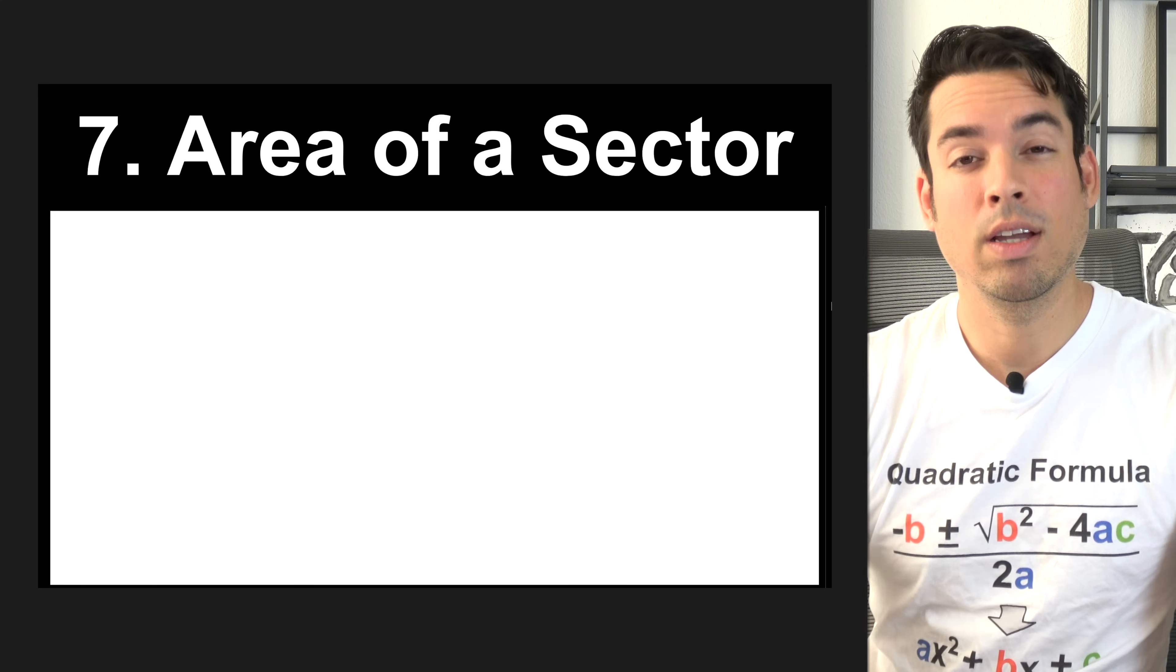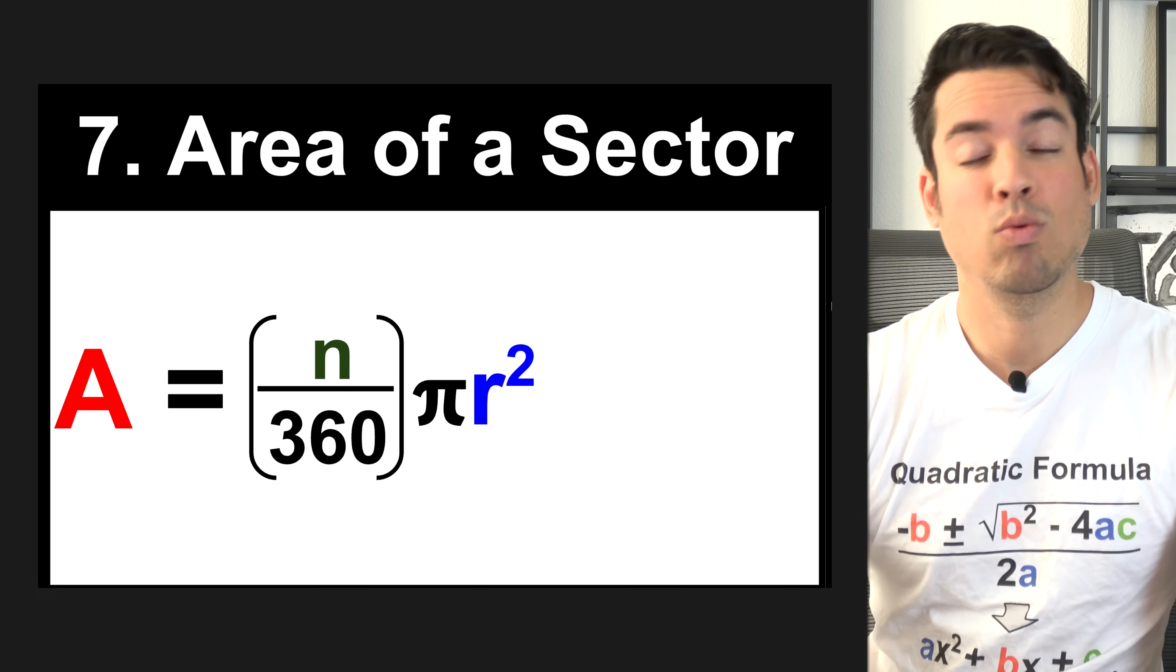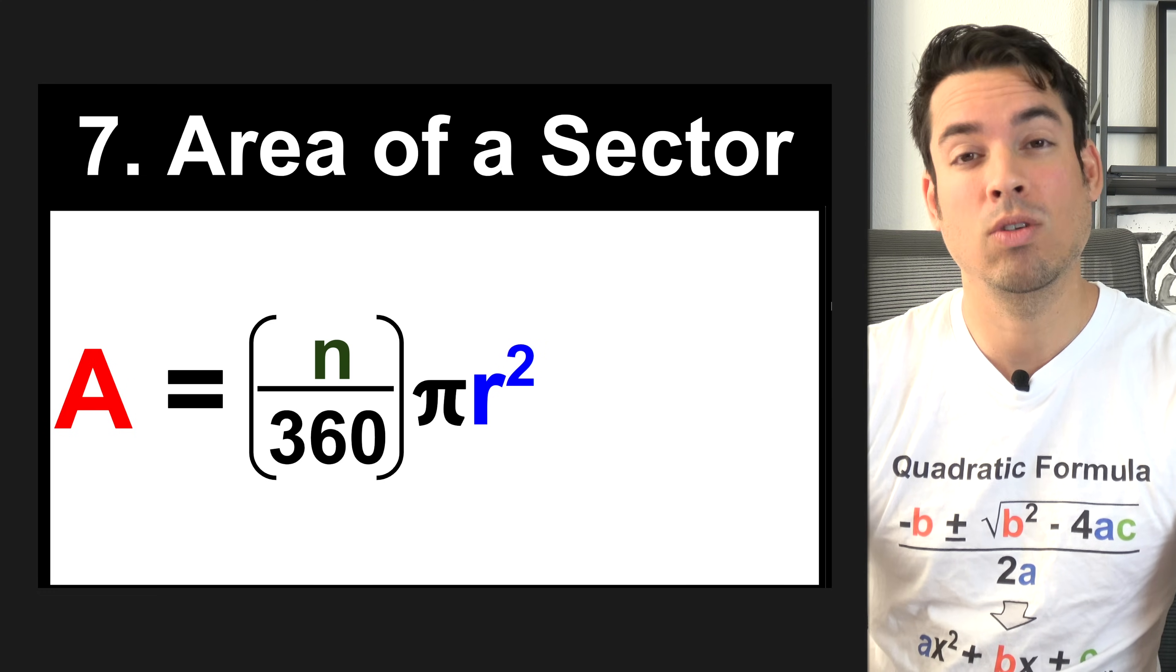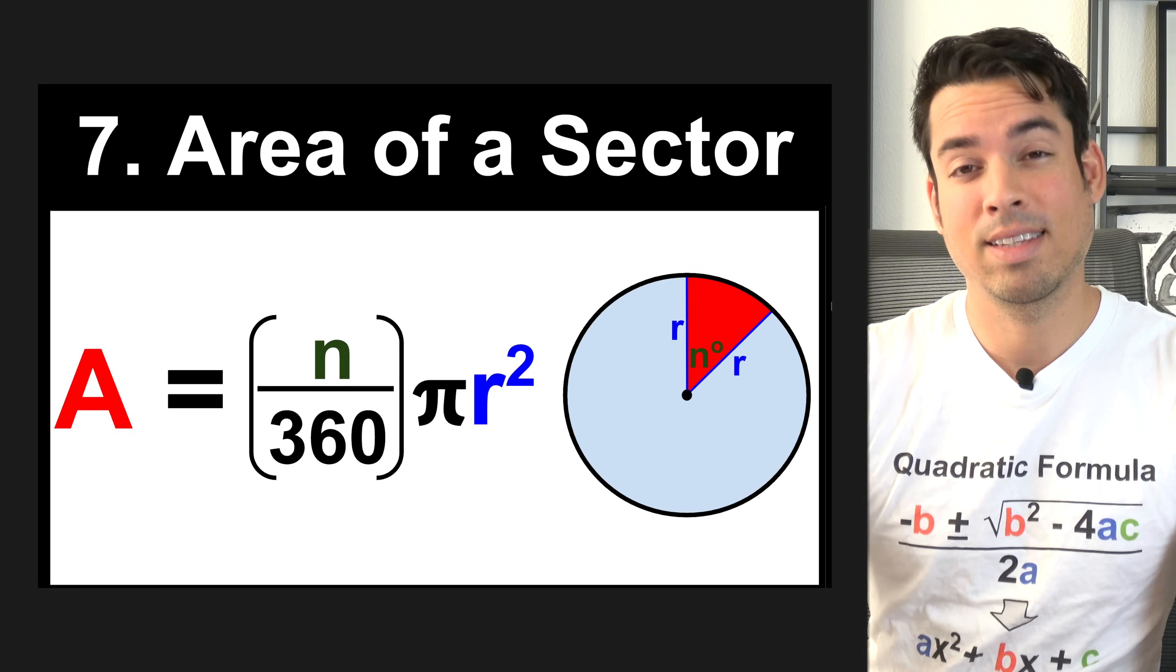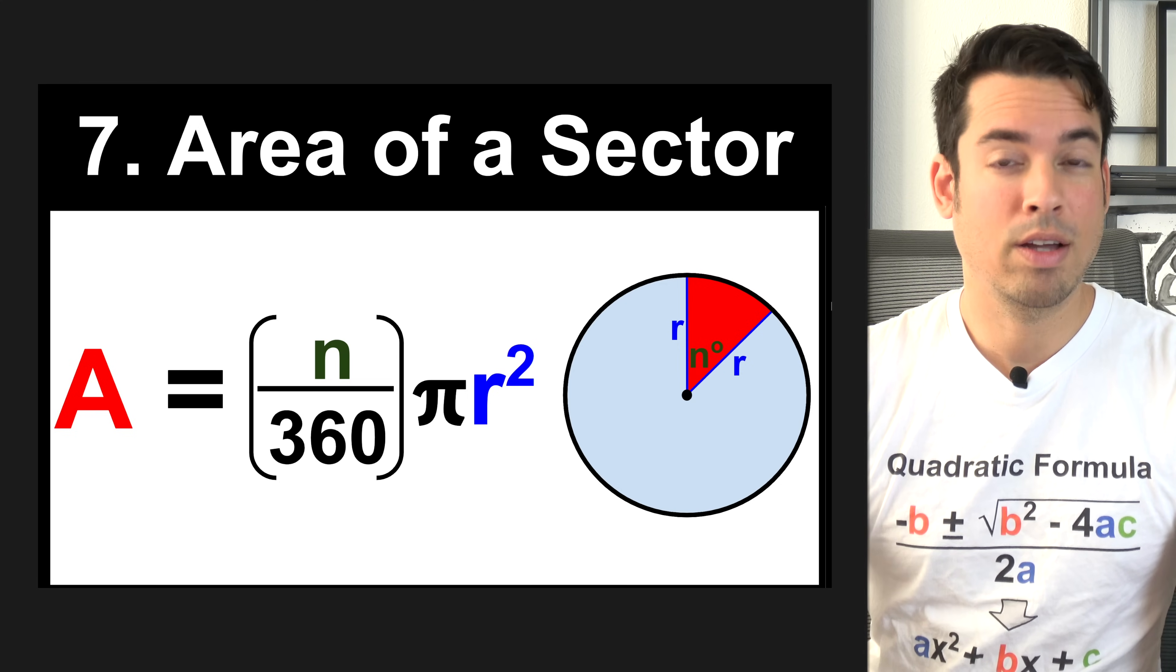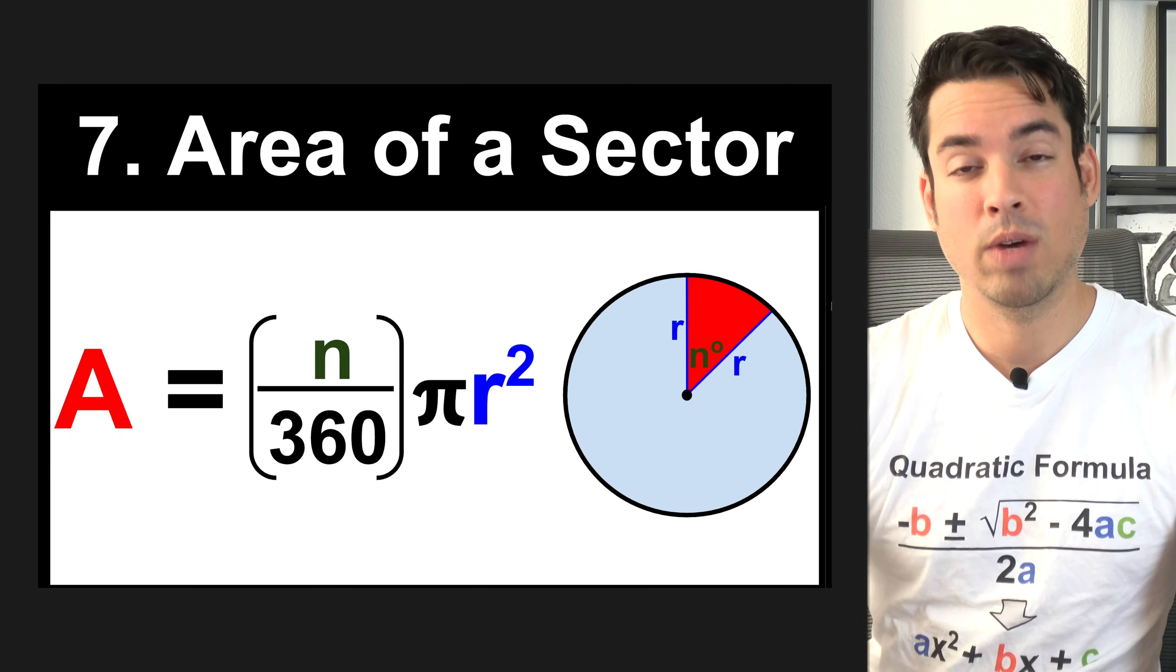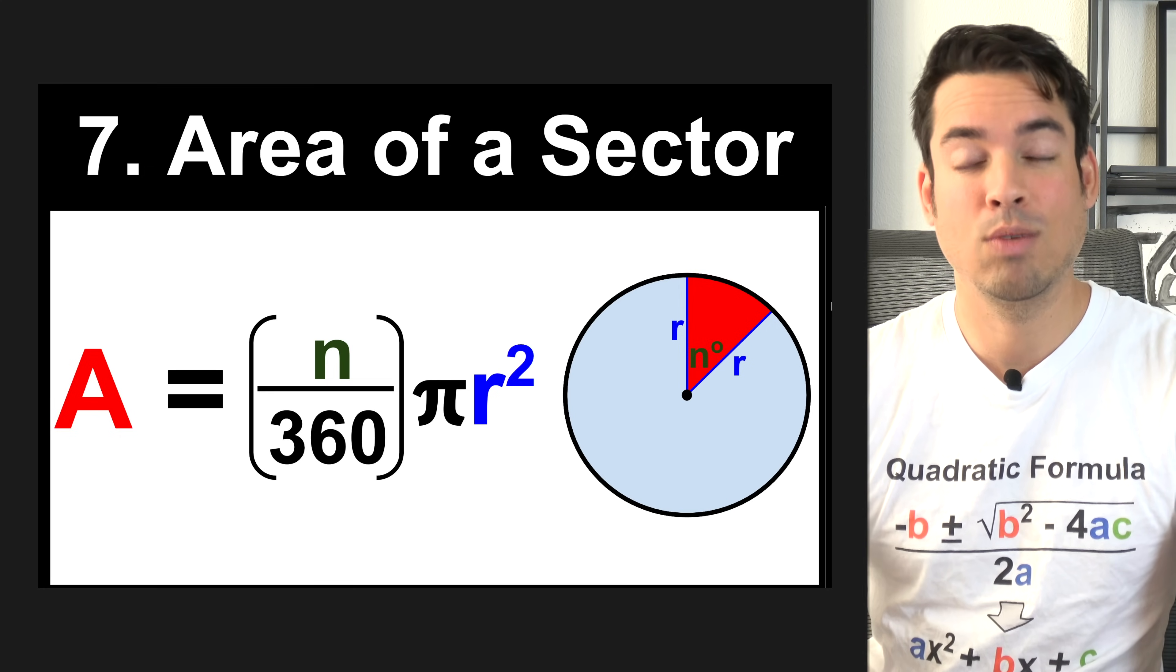Next, we have the formula for the area of a sector. Here it is n over 360 times pi r squared, where n is the central angle cutting out this sector. Here's an example. You'll see n is that central angle, and r is the radius. This is in degrees, which is why 360 is below the n, and just to reiterate, if this was in radians, you could replace 360 with 2 pi.